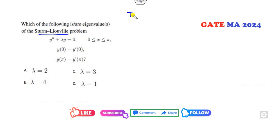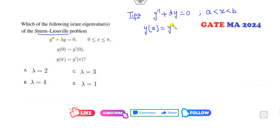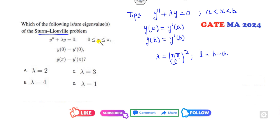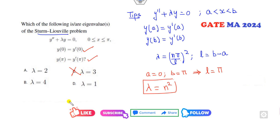The next problem is a Sturm-Liouville problem. The shortcut: whenever the solution satisfies y(a) = y'(a) and y(b) = y'(b), the eigenvalues are λ = (nπ/l)², where l = b - a. Comparing: a = 0, b = π, so l = π. Therefore λ = (nπ/π)² = n², where n is a positive natural number. The values that are perfect squares of positive integers are valid, so options B and D are the correct answers.